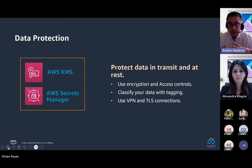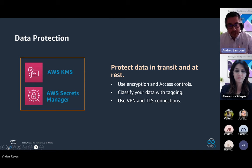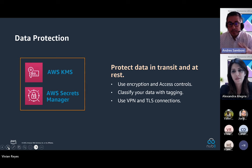For data protection, AWS provides KMS and Secrets Manager to protect data using encryption in transit and at rest. Effective data safeguarding includes fine-grained access control to limit unauthorized access, managing encryption keys, choosing appropriate encryption methods, validating data integrity, and establishing data retention policies.